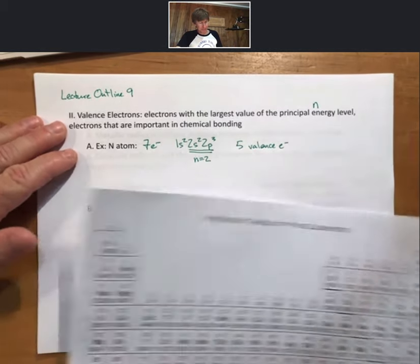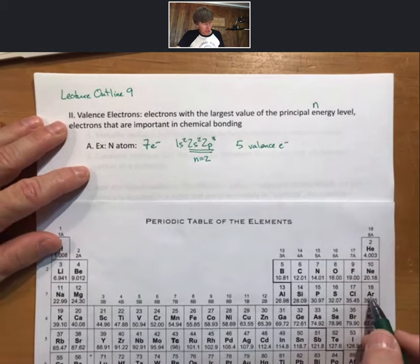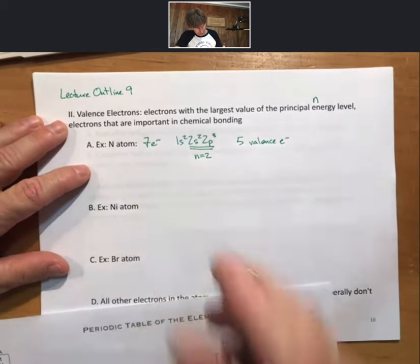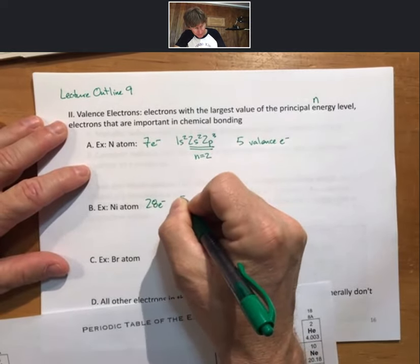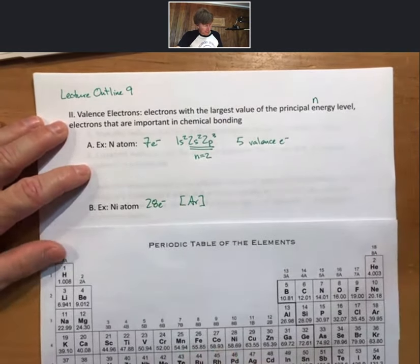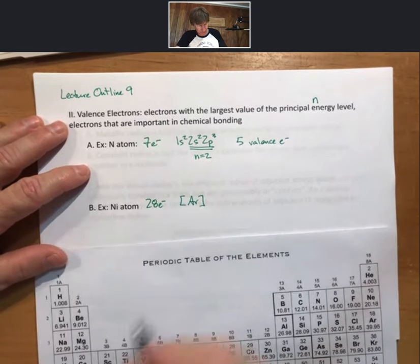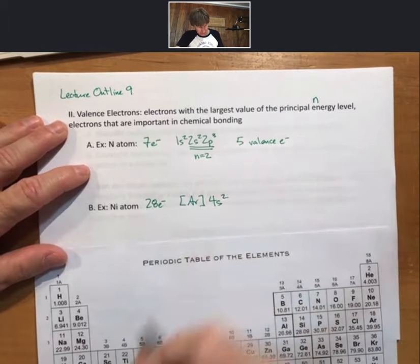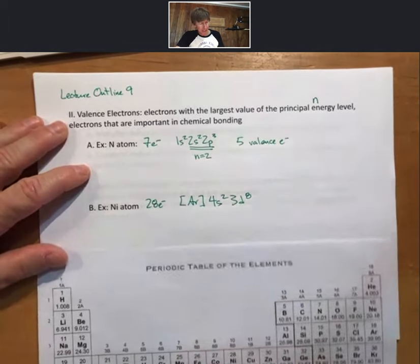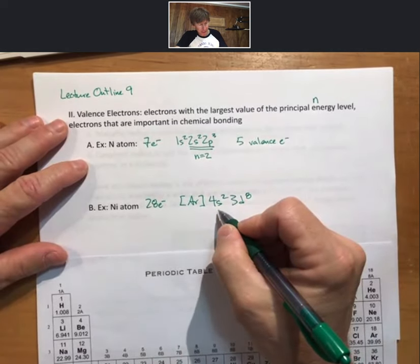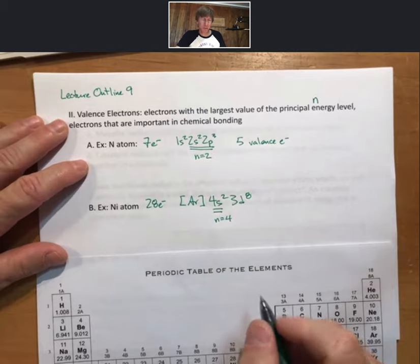For the nickel atom, element number 28, 28 electrons. Same first 18 electrons as argon, then 4s2, 3d8. That means that for the highest value of n is n equals 4, and there are two valence electrons.